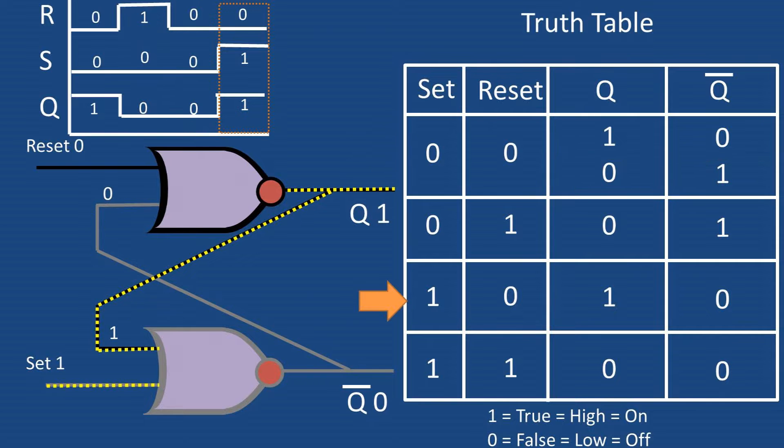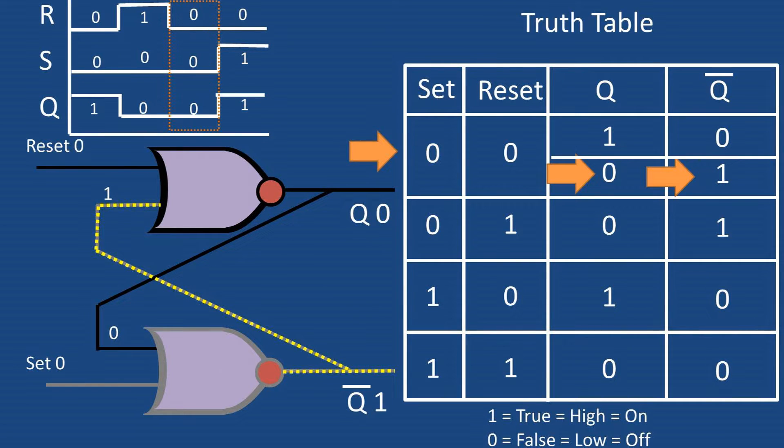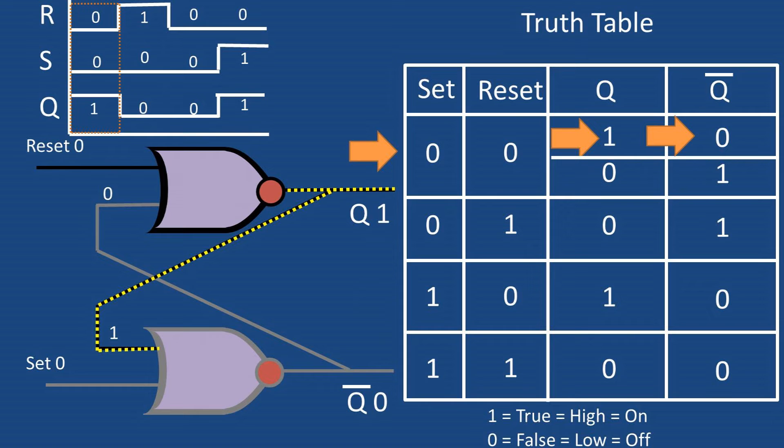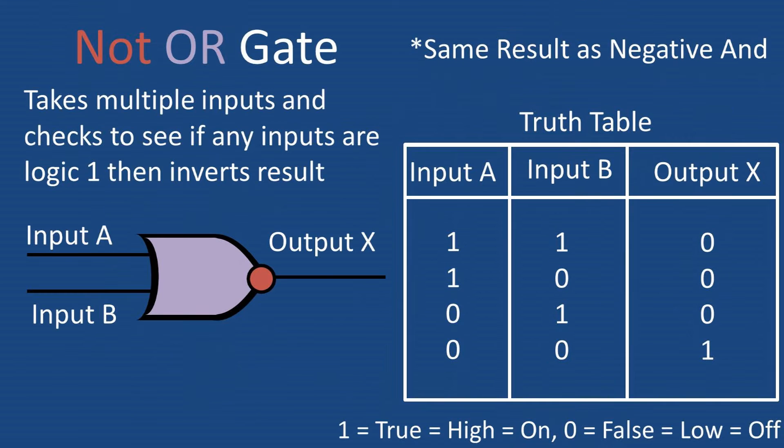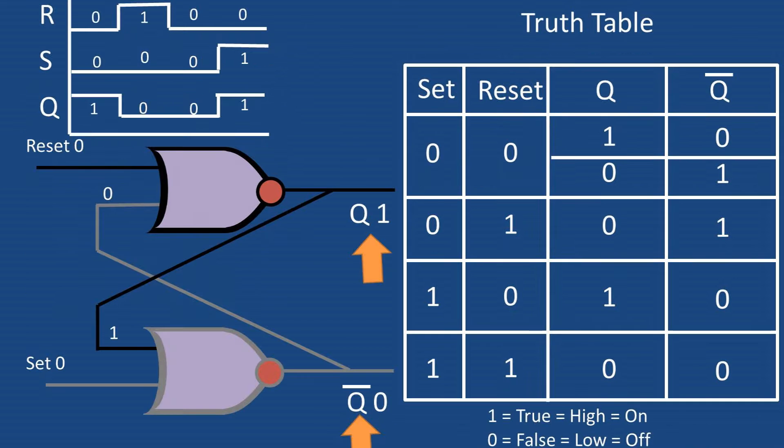We will be focusing on an active high set-reset latch that changes state when a logic one or high is sent to the set or reset input. For these logic gates, as a refresher, here's the truth table for a NOR gate. Basically, anytime there is a one for either or both of the inputs it outputs a logic zero. If there are two logic zeros for the inputs then it will output a logic one.